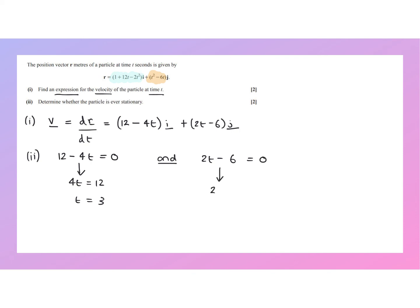If we solve the second equation, 2t equals 6, t equals 3 again. So it's very clear that both components, i and j, are 0 when t equals 3 seconds.